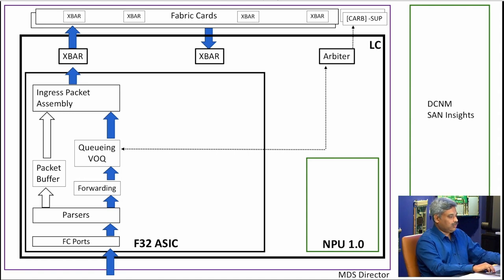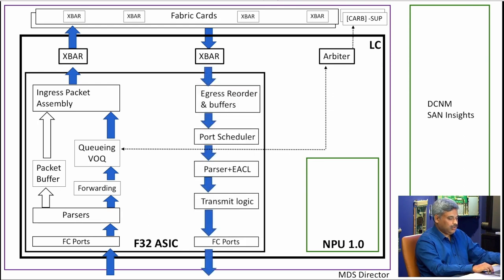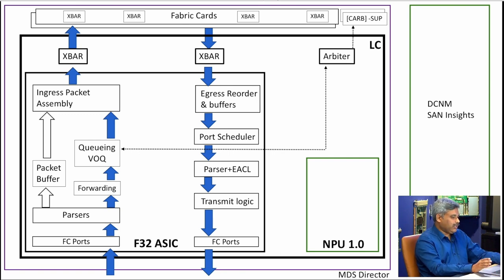Once the grant comes, the packet continues through packet assembly to the crossbar and to the fabric ASIC. The fabric cards switch the packet between line cards, and then it comes back on the egress line card through the crossbar ASIC to the FC 32 egress port side. Since there are multiple paths to the crossbar, we need a reorder buffer, and after that we have various port scheduling options — such as DWR for fairness or for allocating bandwidth differently to different priority queues.